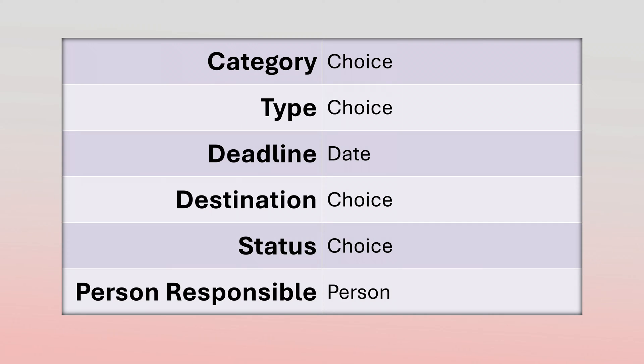The other columns we need, we will have to add one by one. These are the columns we are going to add: Category and Type. Category is for the content; Type is for the type of content like short or long. Then we have a deadline, where to post it, and who is responsible. These are just demo columns — you can add as many as you want.